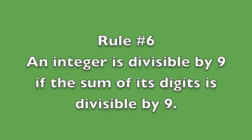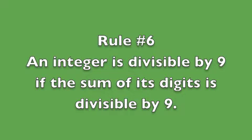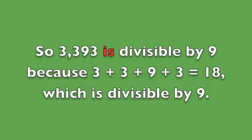Rule number 6: an integer is divisible by 9 if the sum of its digits is divisible by 9. For example, 3,393 is divisible by 9 because 3 plus 3 plus 9 plus 3 equals 18, which is divisible by 9.